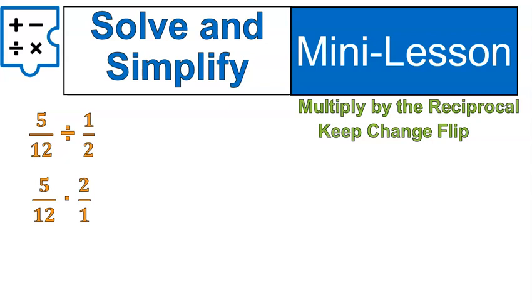Is that what your first step looked like? You keep the first fraction, 5 over 12, change the symbol to multiplication, and then your second fraction gets flipped over, or in other words, becomes the reciprocal. Now we're going to multiply. Try that step.